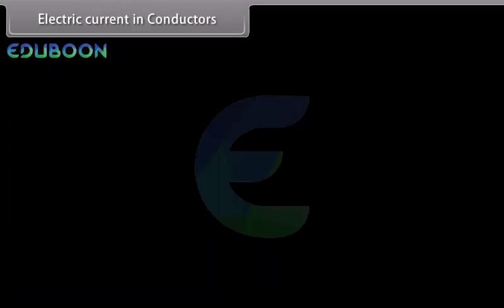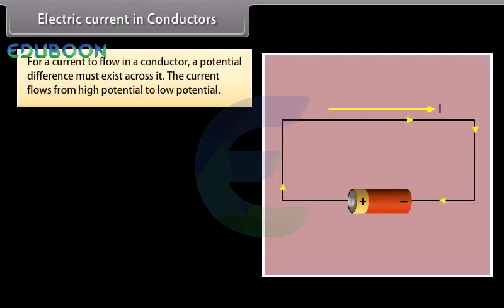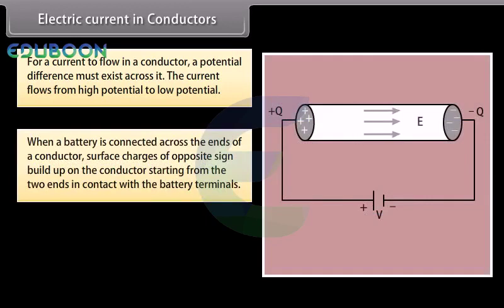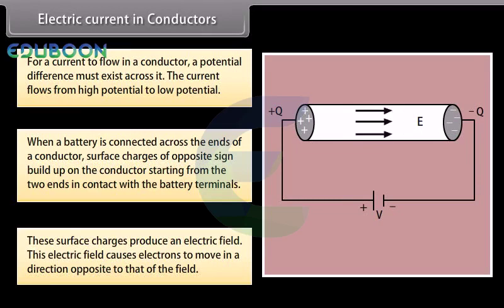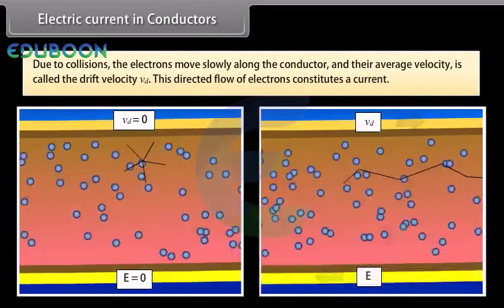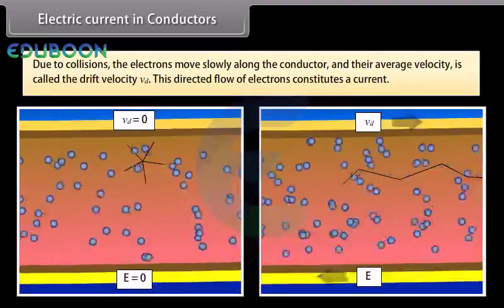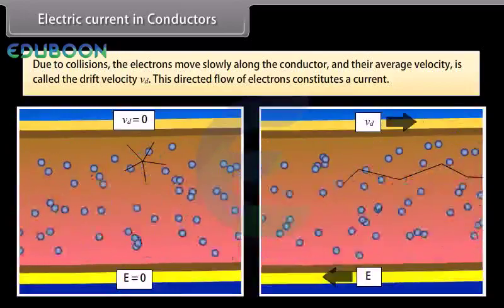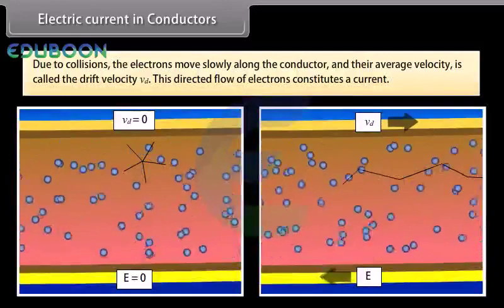Electric current in conductors: For a current to flow in a conductor, a potential difference must exist across it. Current flows from high potential to low potential. When a battery is connected across the ends of a conductor, surface charges of opposite sign build up on the conductor starting from the two ends in contact with the battery terminals. These surface charges produce an electric field, which causes electrons to move opposite to the field direction. Due to collisions, electrons move slowly along the conductor, and their average velocity is called the drift velocity Vd. This directed flow of electrons constitutes a current.